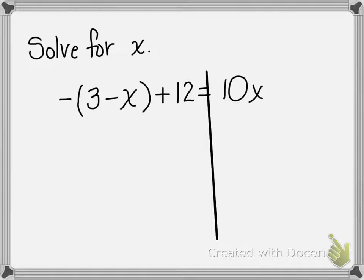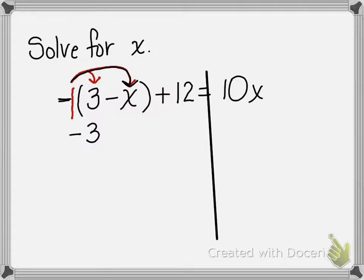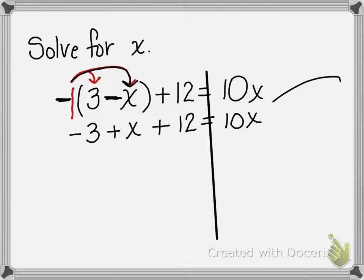Some of you may already be doing this as you write — there is a 1 right here and I'm going to hippity hoppity distributive property. Negative 1 times 3 gives me negative 3, and negative 1 times negative x — a negative times a negative — gives me positive x. Then I just have that plus 12 along for the ride, equals 10x.